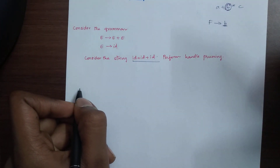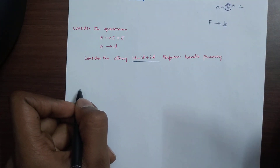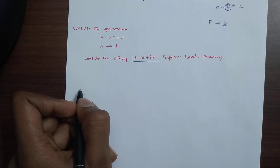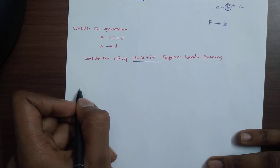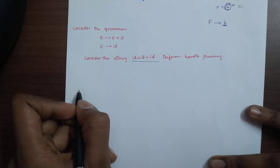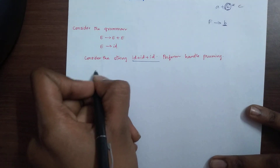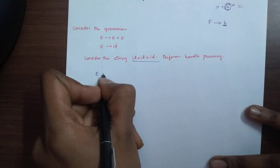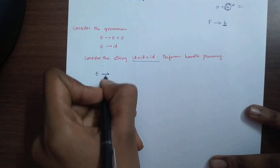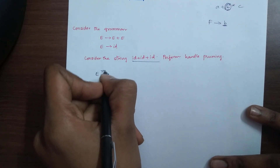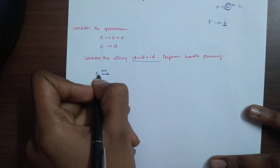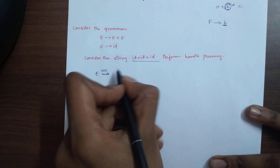For handle pruning, first write the rightmost derivation. Write the sentential form. The rightmost derivation starts with E plus E plus E.